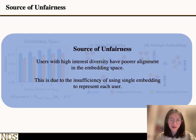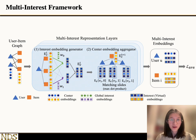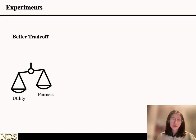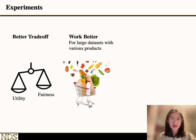After analyzing the source of unfairness, which is related to the insufficiency of single embedding, we propose a multi-interest framework with two components: the interest embedding generator to extract from users' interactions to virtual interest embeddings, and the center embedding aggregator to allow higher-order aggregation. Through experiments, we verify that our proposed model achieves a better trade-off between utility and fairness, and it works especially well for larger datasets with various products.